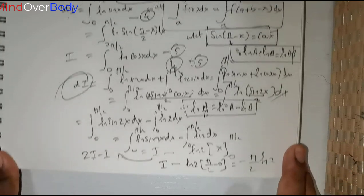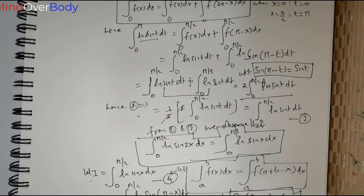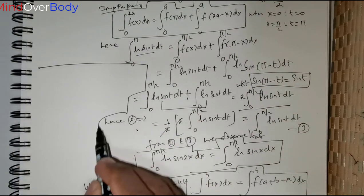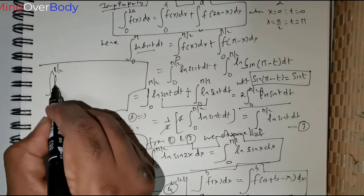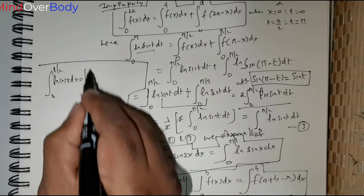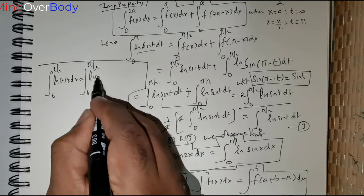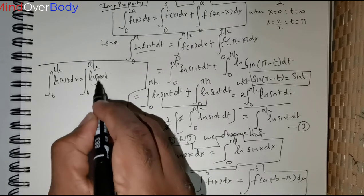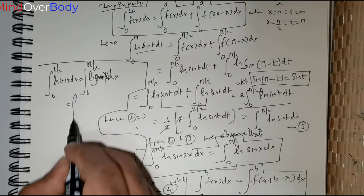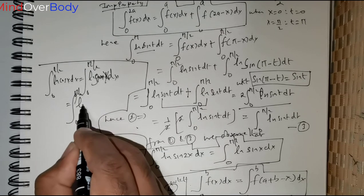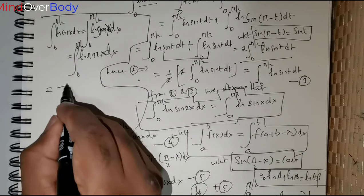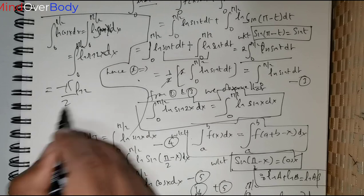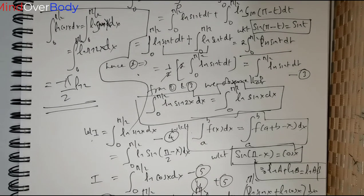The final conclusion is: from all of this we can clearly see that ∫₀^(π/2) ln(cos x) dx = ∫₀^(π/2) ln(sin x) dx = ∫₀^(π/2) ln(sin 2x) dx = −(π/2) ln 2. This is a very important result. Thank you students, enjoy your day.